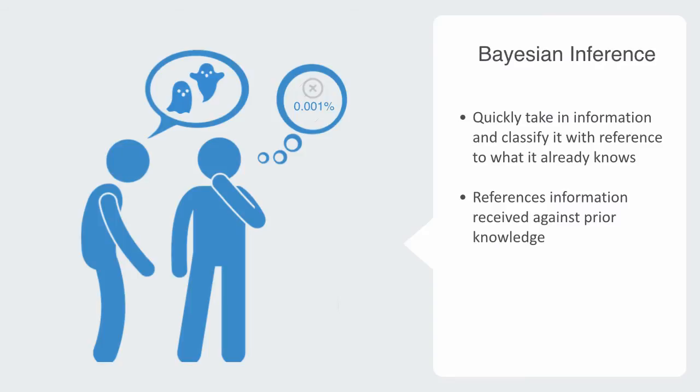Bayesian inference references any new information received by the agent against prior knowledge in order to ascribe a probability value to the likelihood of its validity. If the information is deemed to have a high probability of validity, it is incorporated into the agent's schema and used as a reference to infer the validity of any future information it receives.